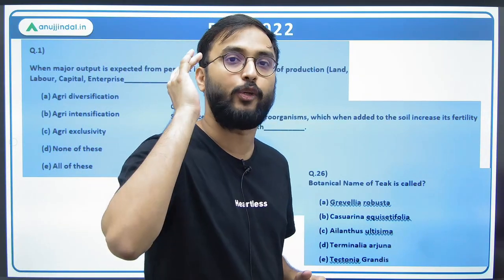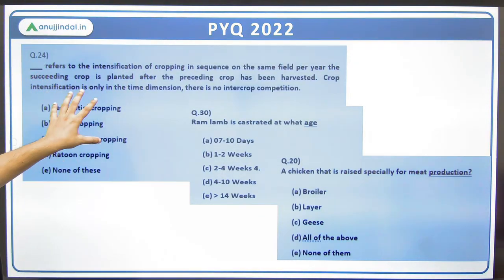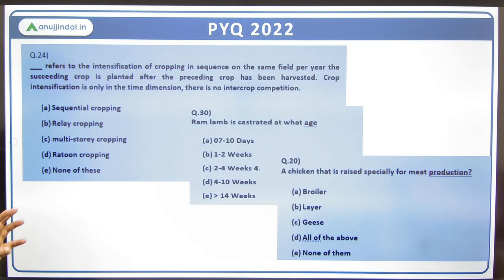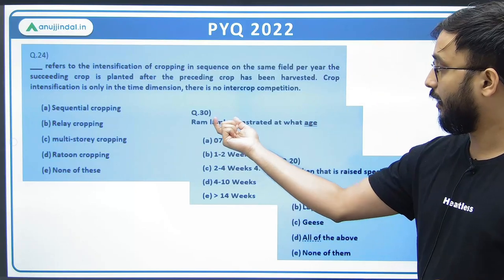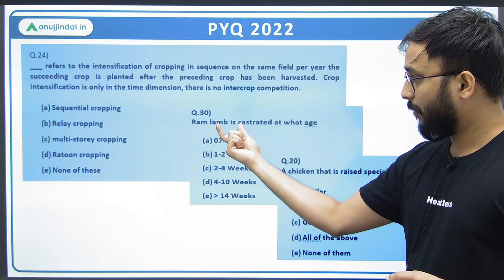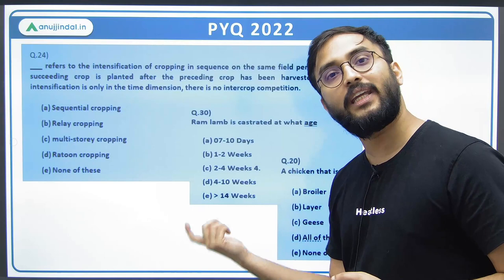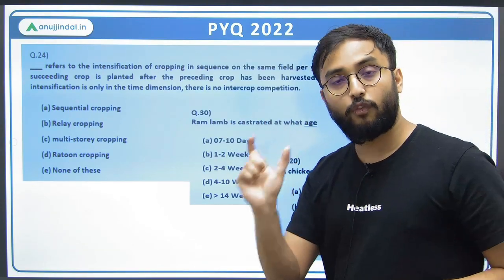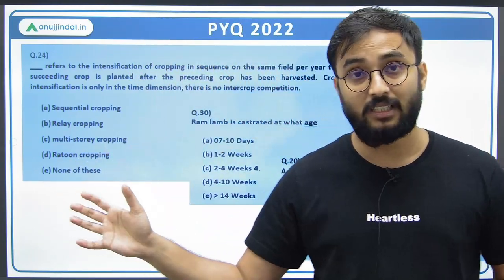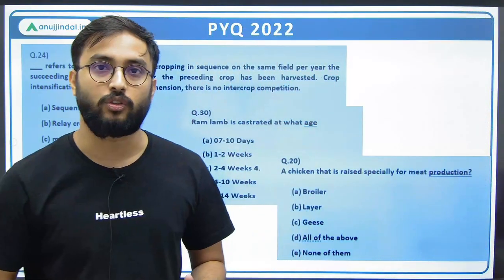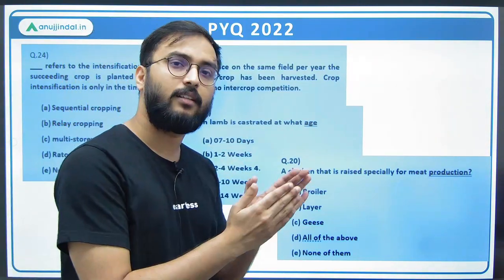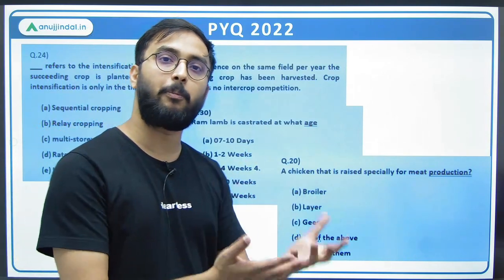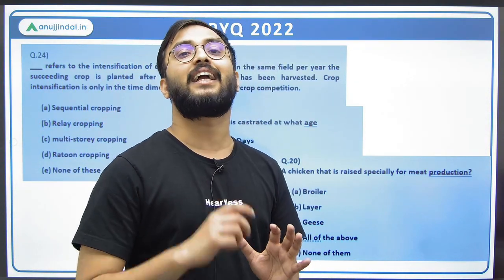Next question related to cropping system: if crops are grown in sequence, the name itself gives it away — sequential cropping. Very logical, general questions. Then: 'Ram lamb is castrated at what age?' Ram lamb means young male lamb; female is called ewe. This is animal husbandry related — you need to know the period of castration for each species: sheep, goat, cattle. These days are asked and repeat in previous year questions. The key takeaway: if you study animal husbandry in depth, it doesn't matter what your graduation is — graduation is just an excuse many students are giving.